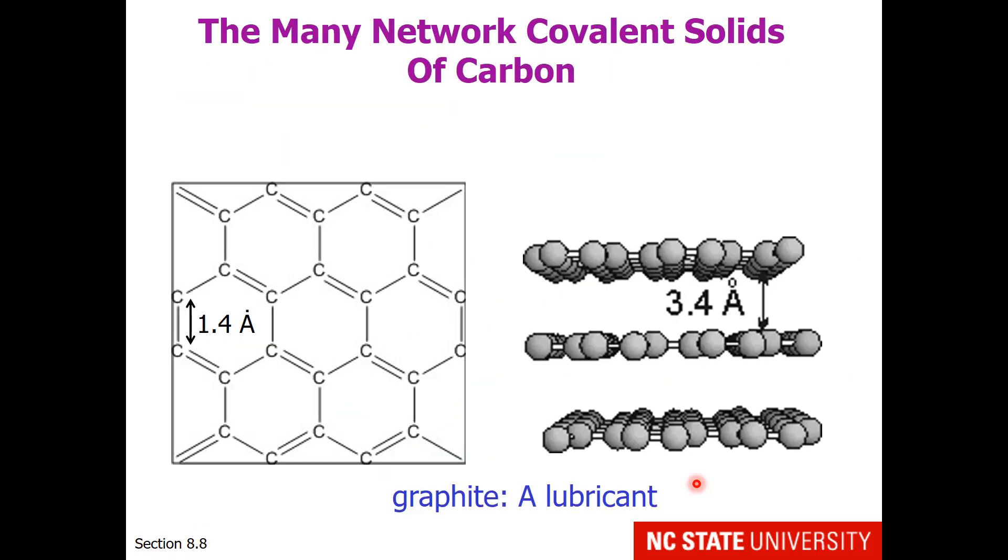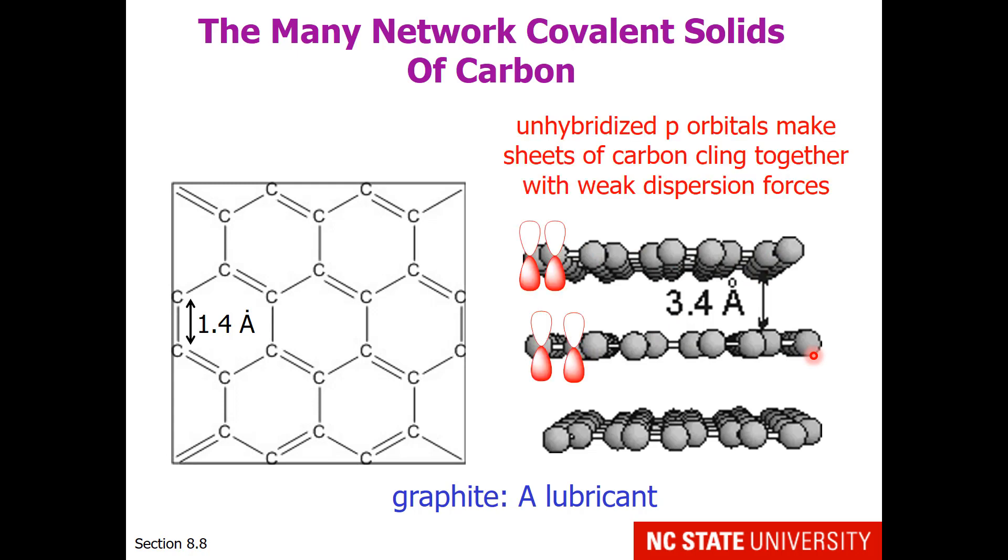Carbon has many network covalent solids. These are called allotropes. One such network covalent solid is graphite. It's composed of an infinite number of carbons, and you notice this is sort of like a benzene ring, but without the hydrogens. We definitely see there's some resonance. Benzene is planar, and graphite sheets are also planar. Graphite sheets tend to be about 3.4 angstroms apart, and the unhybridized p orbitals are what make these sheets of carbon cling together with weak dispersion forces.